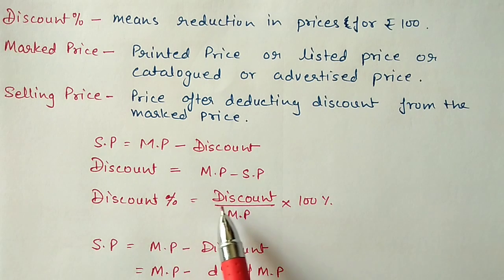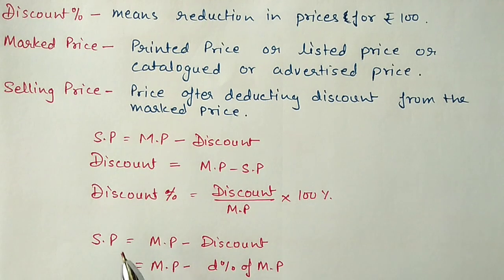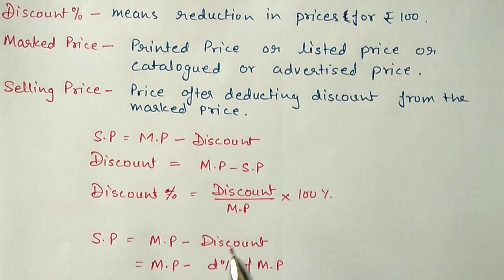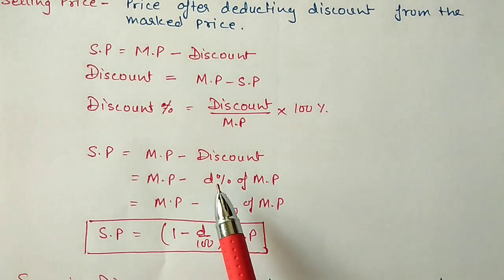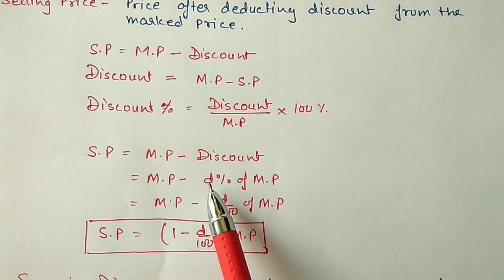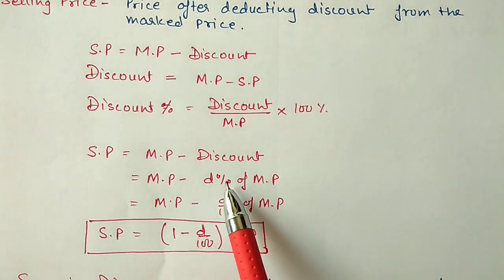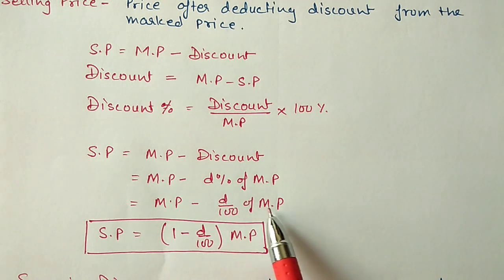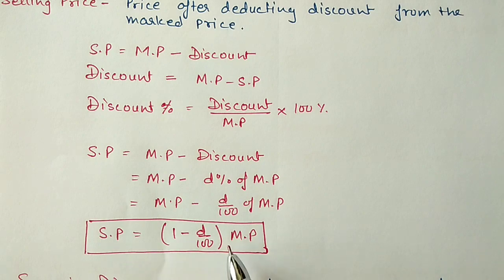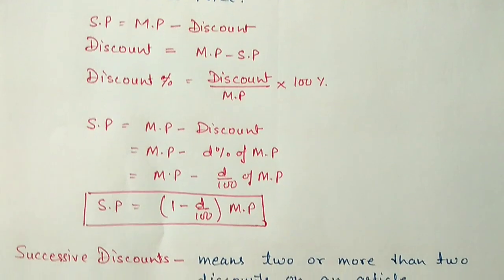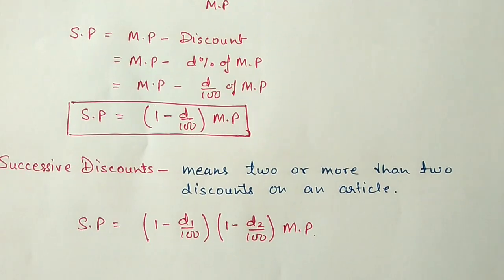Because discount is always given on the marked price, marked price always appears in the formula. We can also rewrite the selling price formula as: SP = (1 − D/100) × MP, where D is the discount percentage. So this formula can also be used, or we can solve directly.